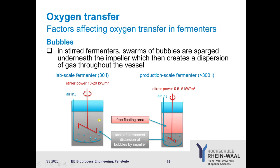In a lab scale fermenter, you have permanent distortion of bubbles by the impeller over the complete area. In a production scale fermenter, you have a so-called free-floating area where there is no dispersion by the stirrer — though you can add more impellers. The stirrer power per cubic meter of culture broth is much higher in a lab scale fermenter than in a production scale fermenter, where you are simply limited.